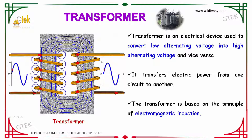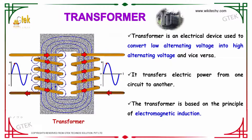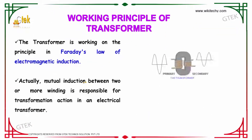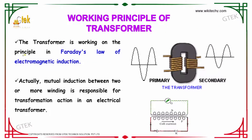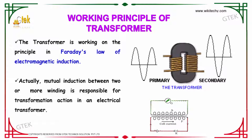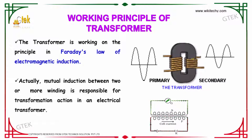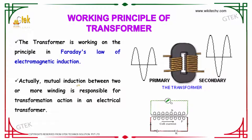The transformer is based on the principle of electromagnetic induction. You are able to see there is a magnetic flux change happening here, which is getting impacted here. The transformer is working on the principle of Faraday's law of electromagnetic induction. The transformer will be having two coils — one is primary, the other one is secondary. This is the number of turns of coils in the metal. Actually, mutual induction between two or more windings is responsible for the transformer action in an electrical transformer.